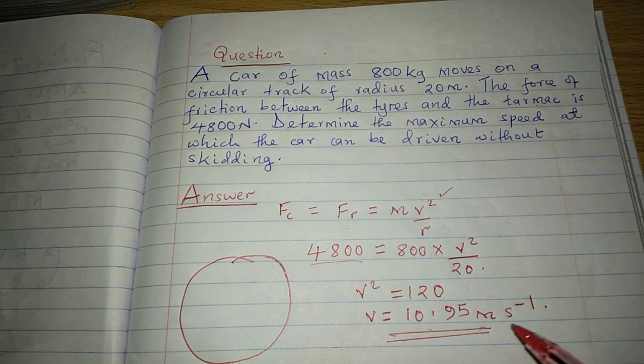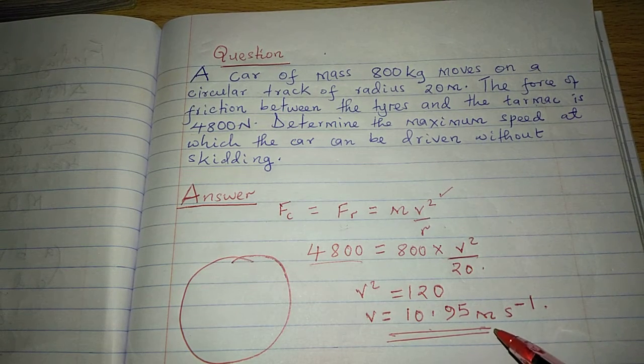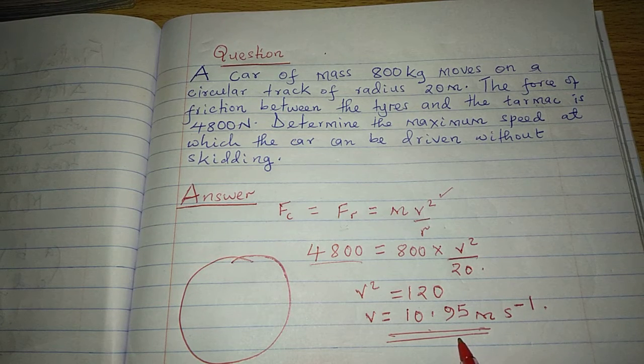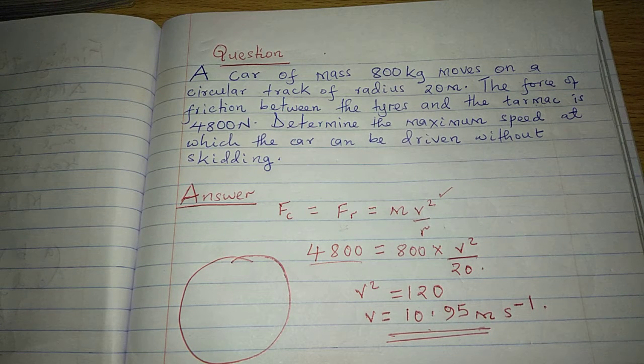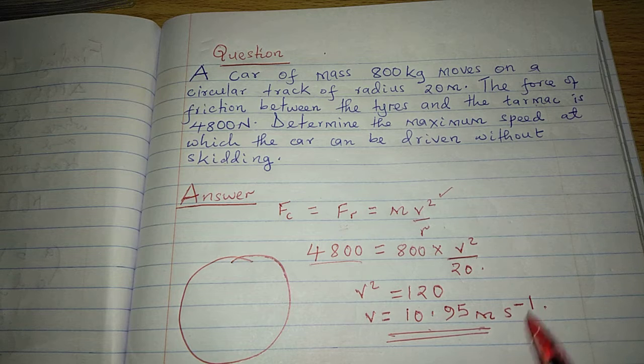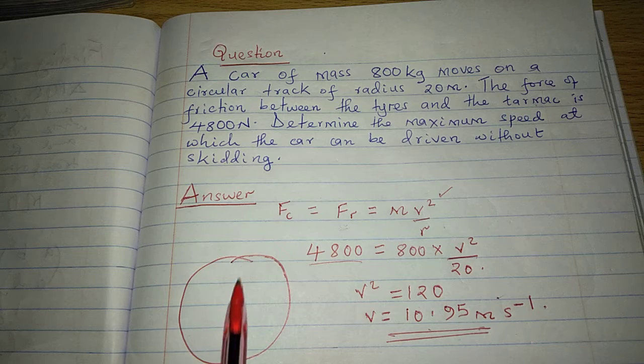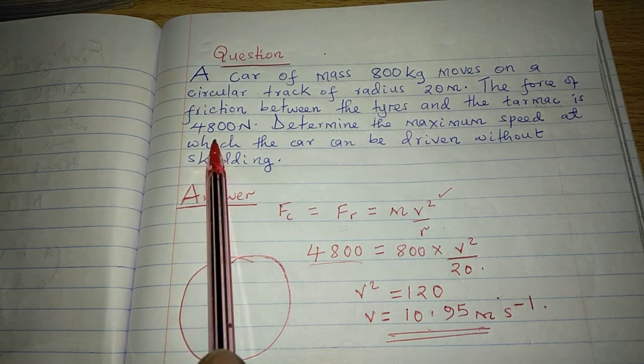That's why we are calling this one the maximum speed the car can be driven at. So any speed below this one, then the car can sustain the circular motion. But beyond this one, it will require a centripetal force that cannot be provided by the present friction.